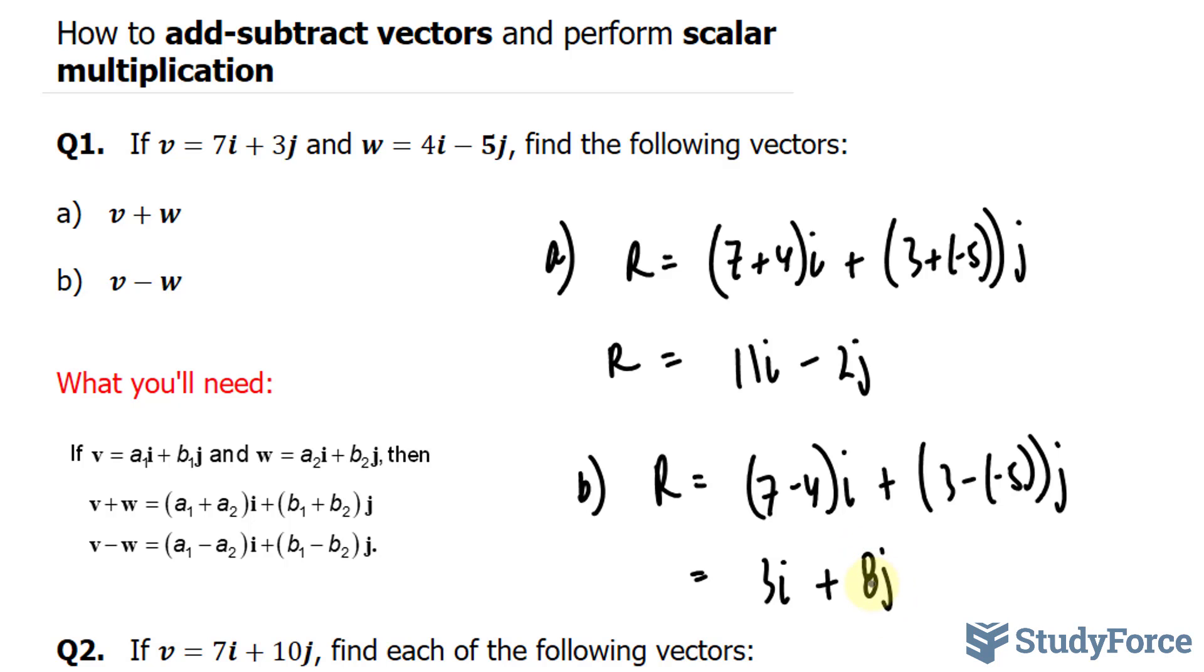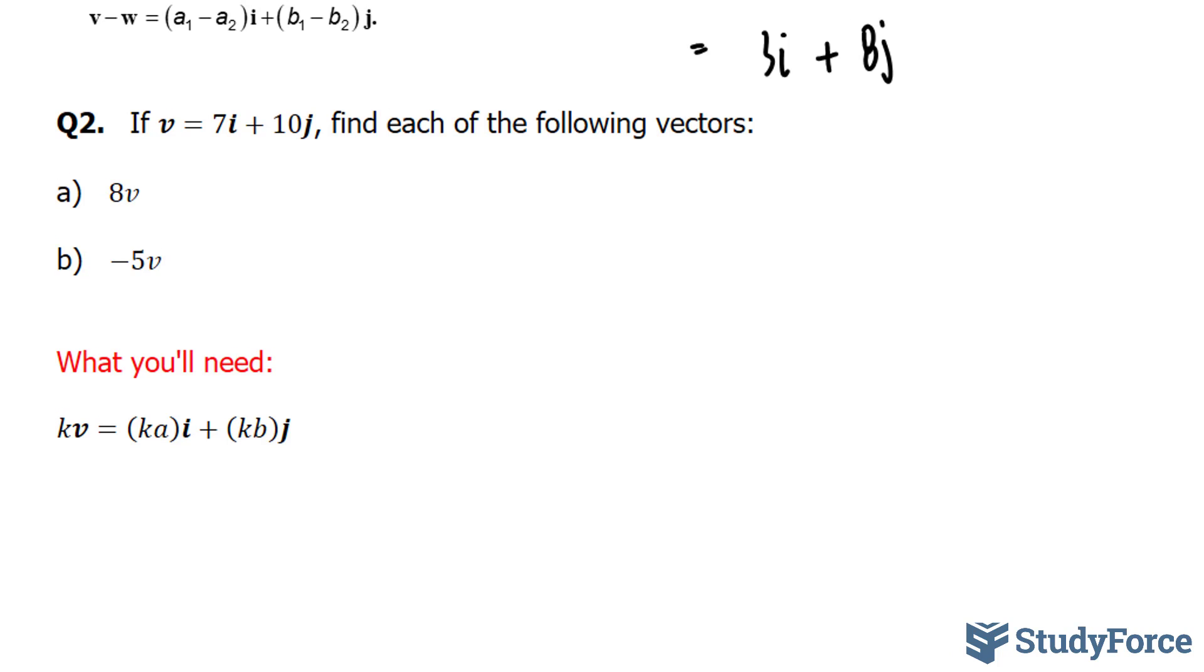Those are the answers to questions a and b. Let's move on to question 2. Here we're asked, if the vector v is equal to 7i plus 10j, find each of the following vectors.